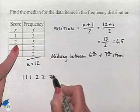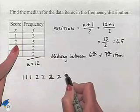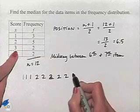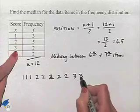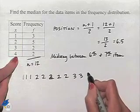And then we're going to have two 3s, and then we would have two 4s.